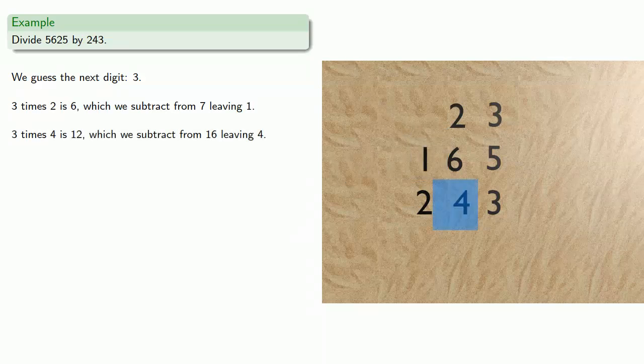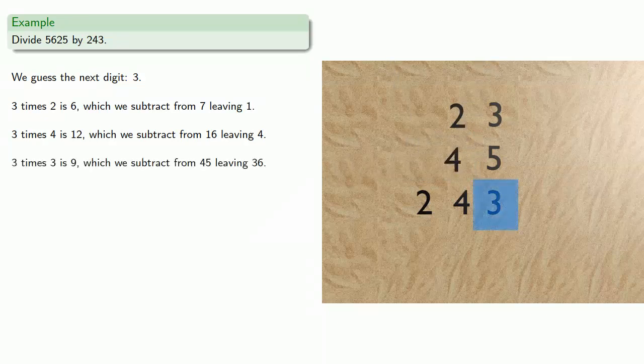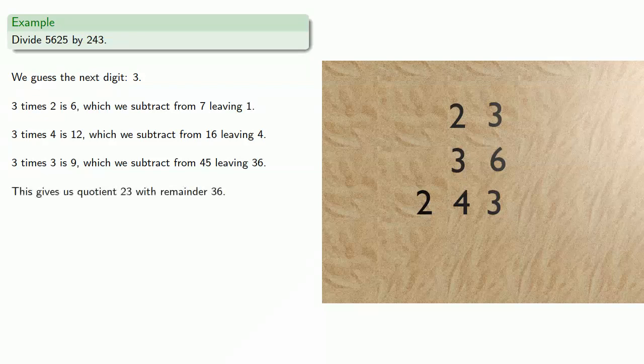3 times 4 is 12, which we subtract from 16, leaving 4. 3 times 3 is 9, which we subtract from 45, leaving 36. And this gives us quotient 23, with remainder 36.